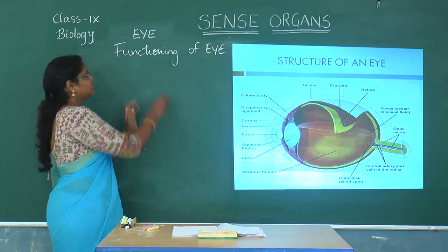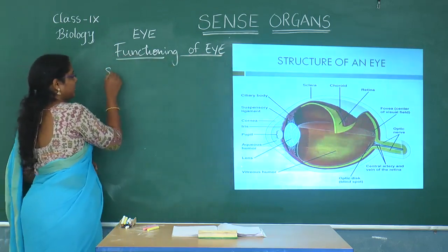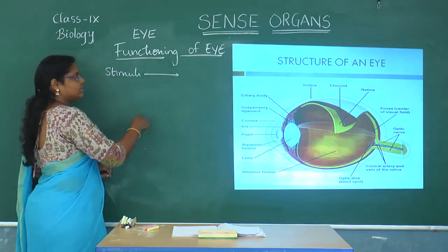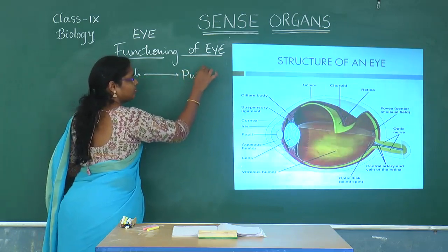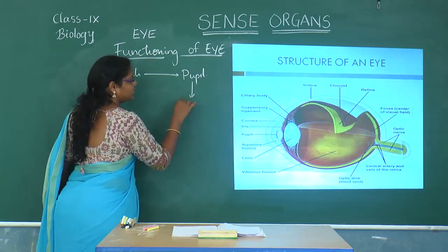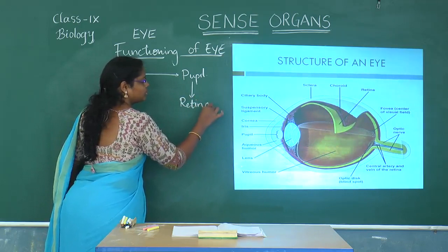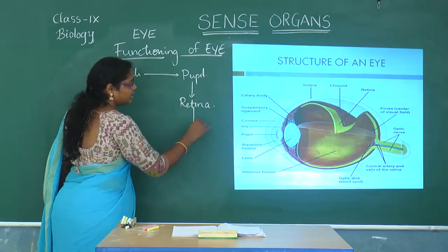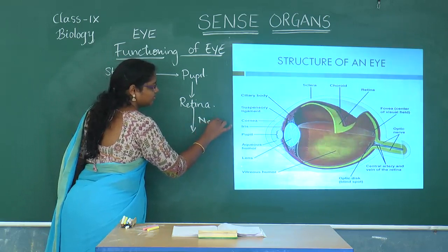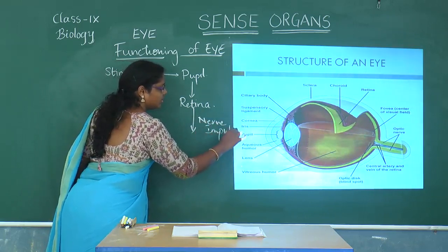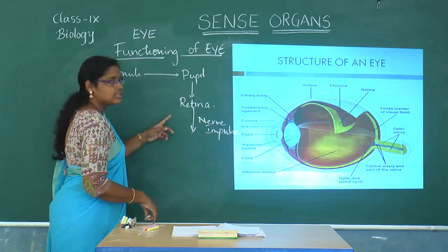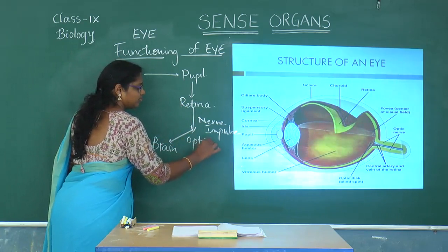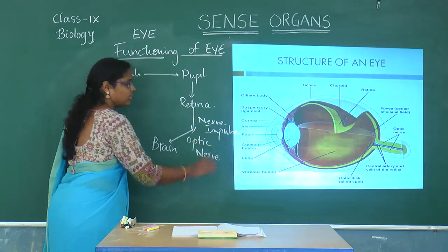To put it in a flowchart: the eye picks up the stimuli — which is the light entering the eye. The light travels through the pupil, and the image is formed on the retina. The retina, which has sensory cells, creates an image and generates nerve impulses, which are then carried to the brain by the optic nerve.